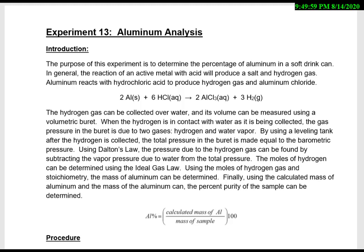Here's experiment 13, aluminum analysis. What we're doing is starting with aluminum from a soft drink can, and the purpose of the lab is to figure out how much of that soft drink can is actually pure aluminum.